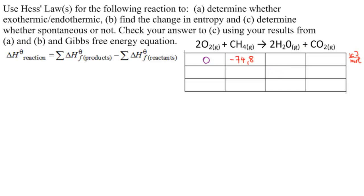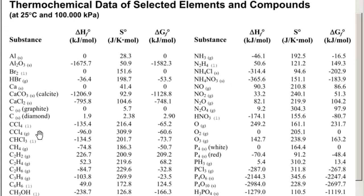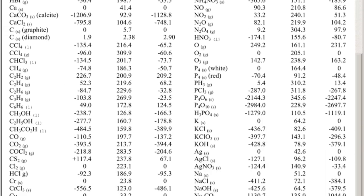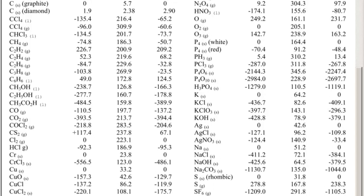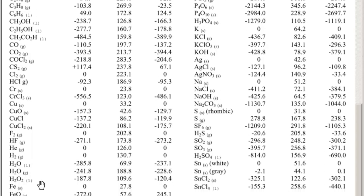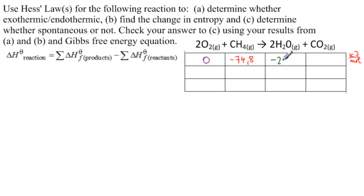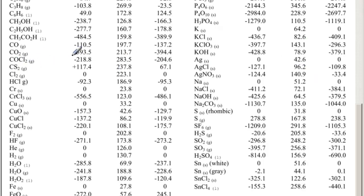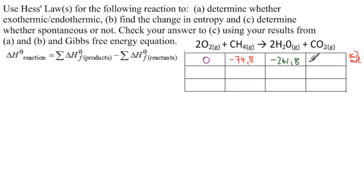Now we're looking for H2O as a gas, so we scroll down on the table. H2O gas is minus 241.8 kilojoules per mole. And then CO2 as a gas is minus 393.5 kilojoules per mole.